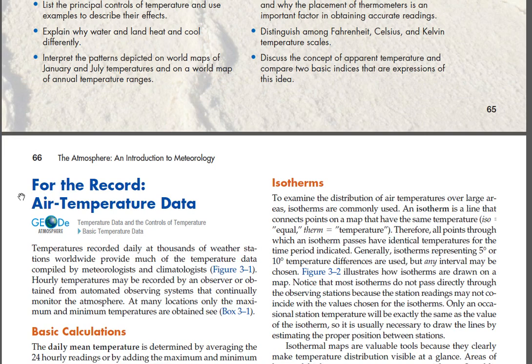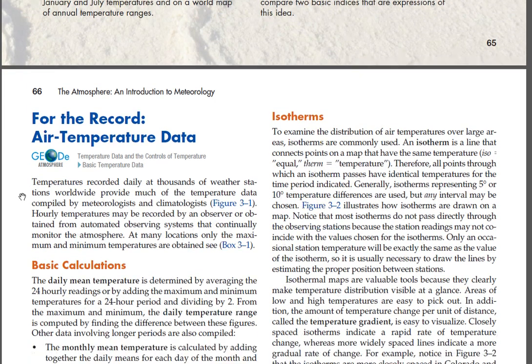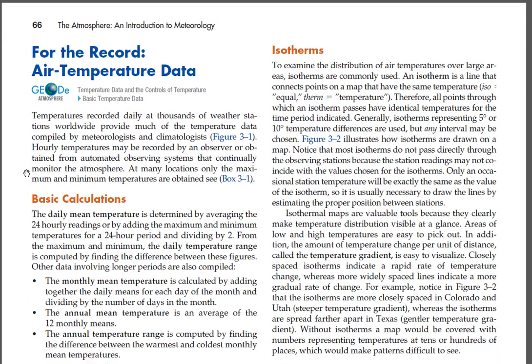For the record — air temperature data. Temperatures recorded daily at thousands of weather stations worldwide provide much of the temperature data compiled by meteorologists and climatologists (Figure 3-1). Hourly temperatures may be recorded by an observer or obtained from automated observing systems that continually monitor the atmosphere. At many locations only the maximum and minimum temperatures are obtained (see Box 3-1).